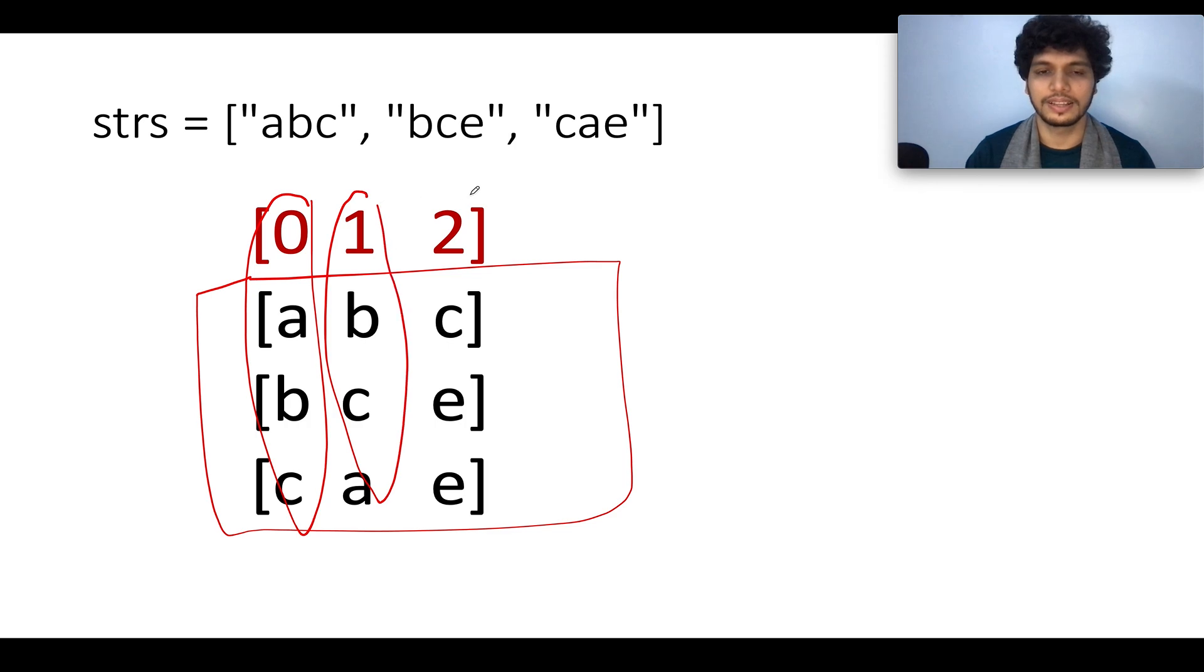And what we are going to do is we need to iterate in column-wise fashion. So the first column is this, the second column is this, the third column is this. And lexographically sorted is a really simple way to check. You check the ASCII value. If this value happens to be greater than this value, then you say that it is lexographically unsorted, otherwise you keep on progressing ahead.